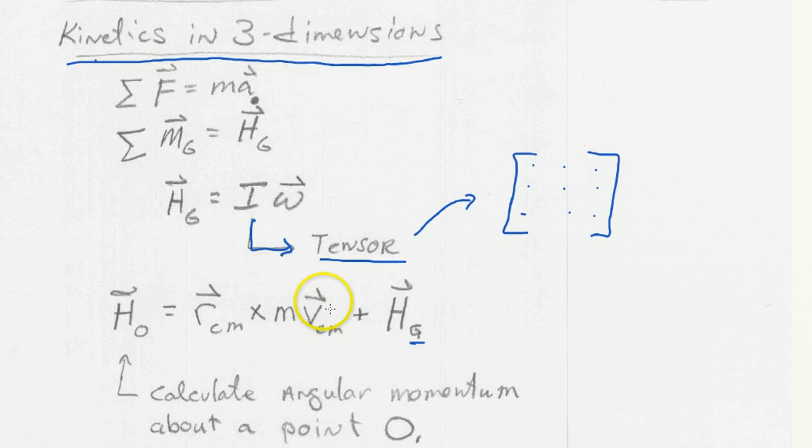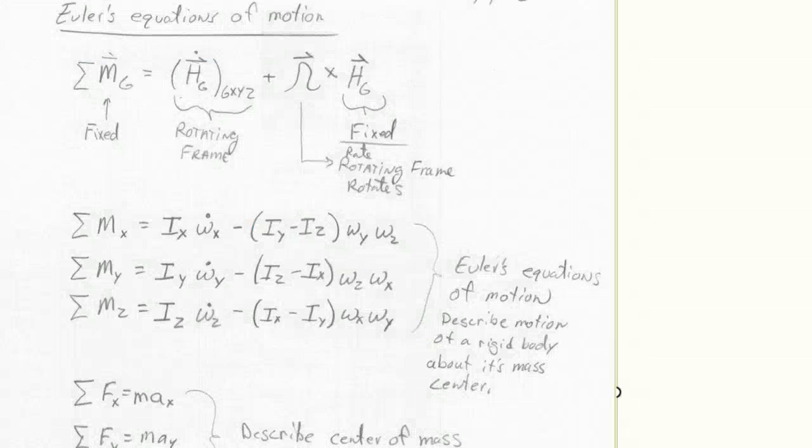After this, we wrote down the Euler's equations of motion. So here's Euler's equations of motions. And remember that the Euler's equations of motions describe motion of a rigid body about its center of mass.